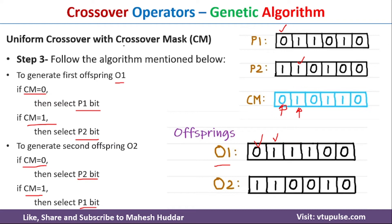For offspring O2, the logic is exactly opposite to O1. When the crossover mask is 0, we select the bit from P2, and when it is 1 we select from P1. So for the first position (mask 0) we take from P2 — that is 1 — and for the second position (mask 1) we take from P1. Applying this same concept to all bits produces the new offspring O2.